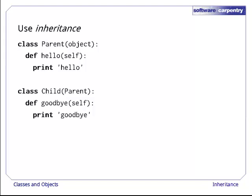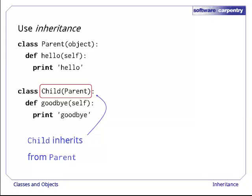Then let's create a second class, child, that defines another method called goodbye. This time, though, we put the name of the class parent in parentheses when we're defining child, rather than the name object. This tells Python that we want child to have everything that we define for parent, as well as anything new we define specifically for child.